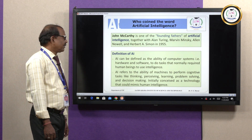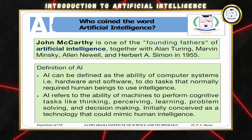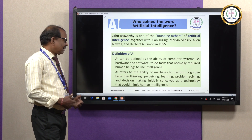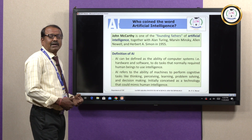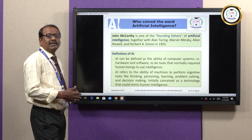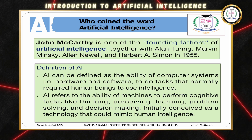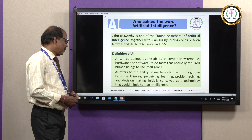Let us come to the definition of AI. So what is AI? The ability from computer systems, especially from hardware and software, to execute some task — whatever tasks are run by human beings. Likewise, by using artificial intelligence, the machine would understand and execute those tasks. The machine will perform various tasks, for example cognitive tasks like thinking and perceiving, learning, problem solving and decision making.